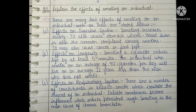Question five: explain the effects of smoking on an individual. Effects on digestive system: smoking increases acidity, causes stomach ulcers, heartburn is a common complaint among smokers, and it may also cause cancer in the food pipe. Effects on longevity: smoking a cigarette reduces life by at least 5 minutes; an individual who smokes an average of 40 cigarettes per day will live an average of 11 years less than a non-smoker. Effects on respiratory system: smoking inflames delicate membranes, inducing persistent cough, and is the main cause of chronic bronchitis.